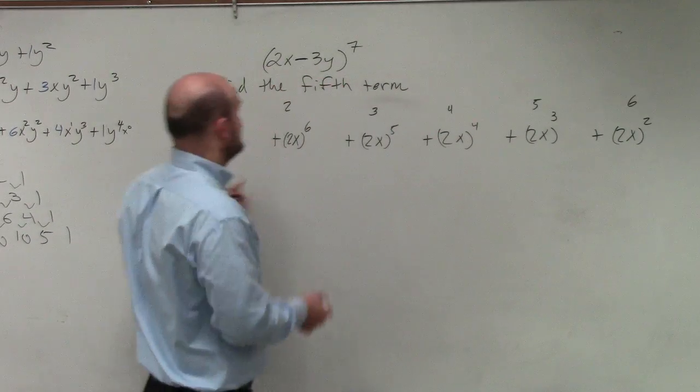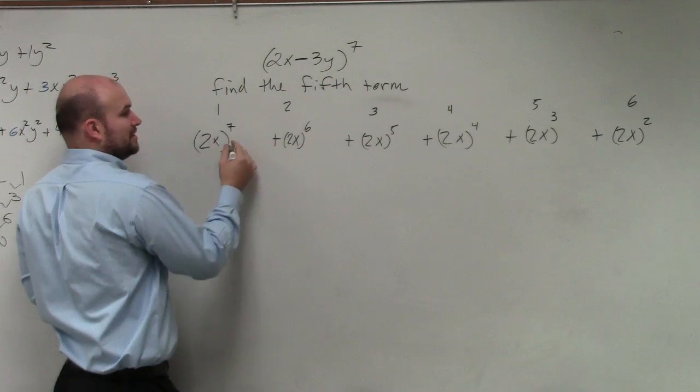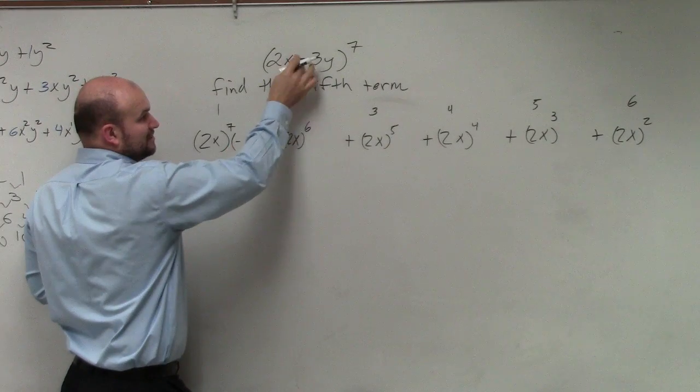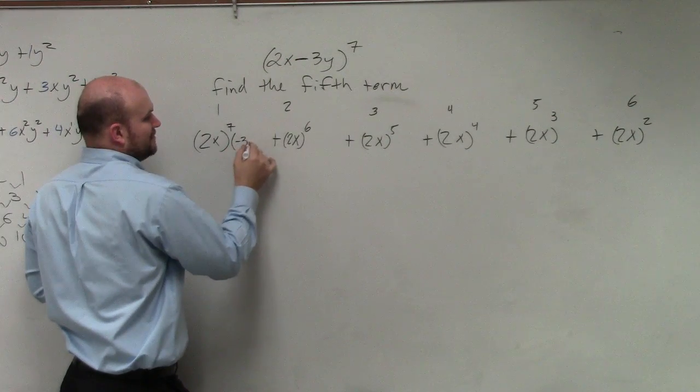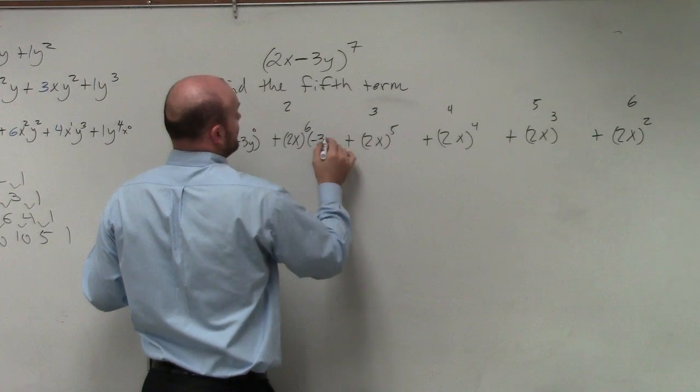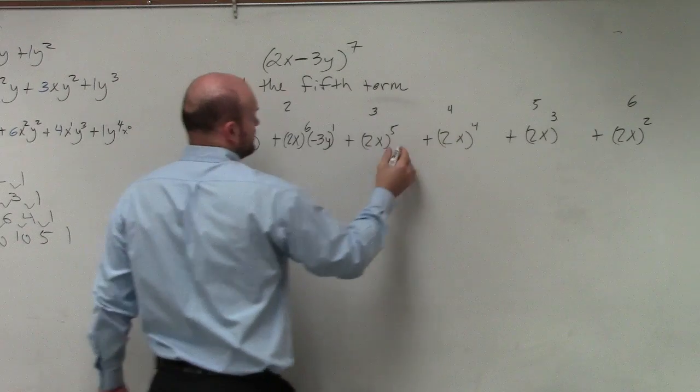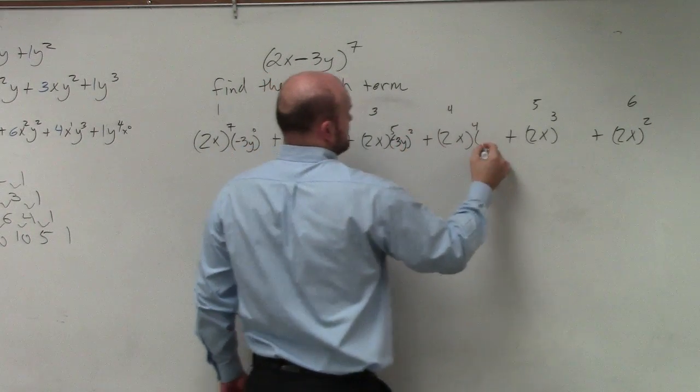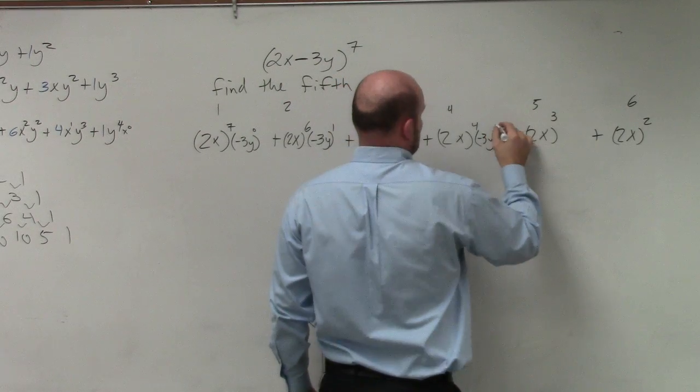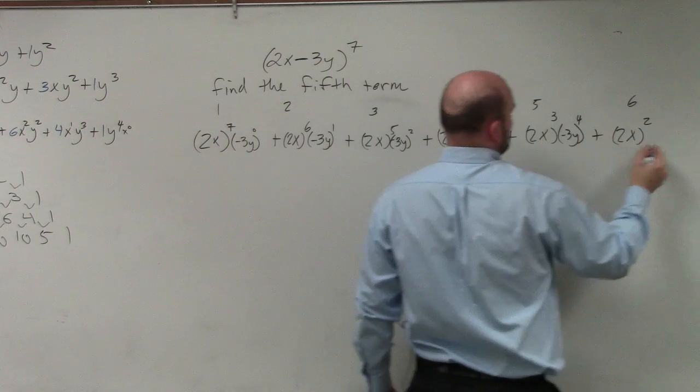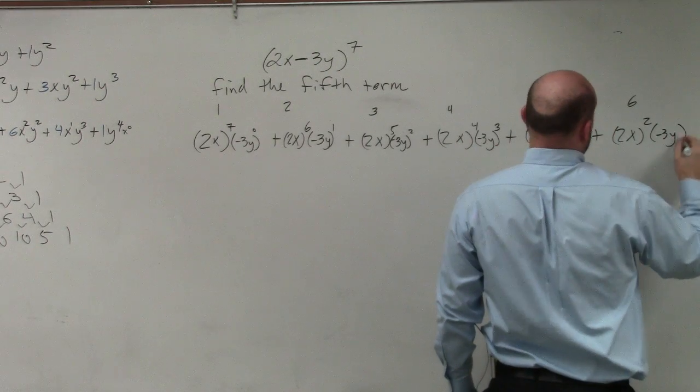Then we do the other term from ascending order. So therefore, we have, and I'm going to include the negative. So we have negative 3y to the zero, negative 3y to the first, negative 3y to the second, negative 3y to the third, negative 3y to the fourth, and negative 3y to the fifth.